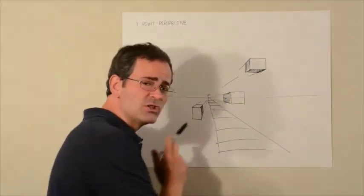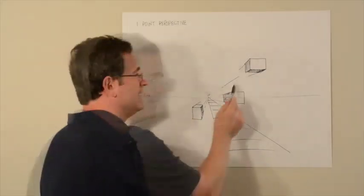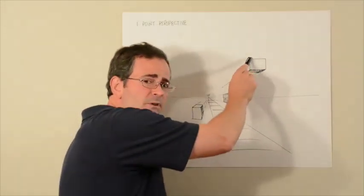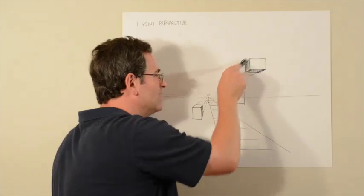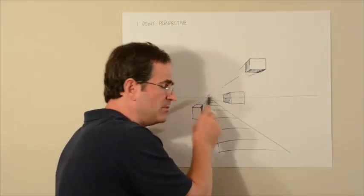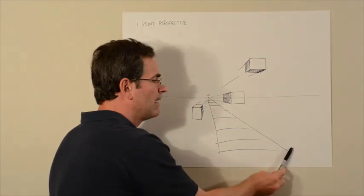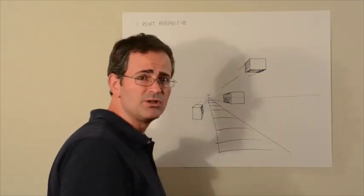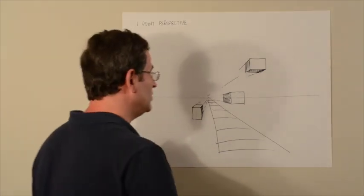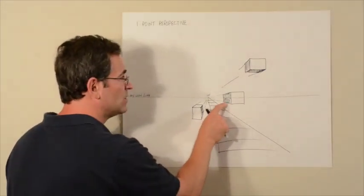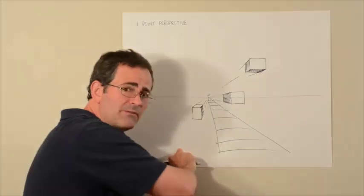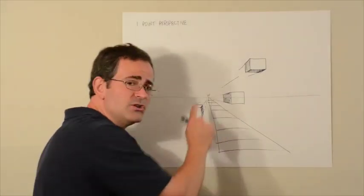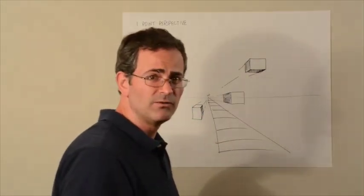Another thing to notice about one-point perspective is that lines above the horizon line go towards the horizon line as they move away from you. Lines below the horizon line also move up towards the horizon line as they go away from you. This line, as it goes away, is not heading away from the horizon. So everything is converging on the horizon line at a single vanishing point.